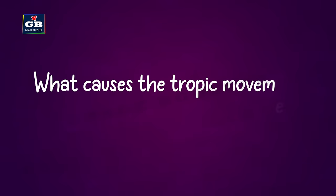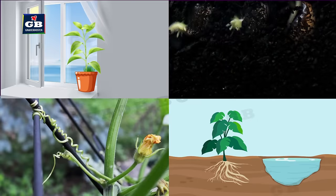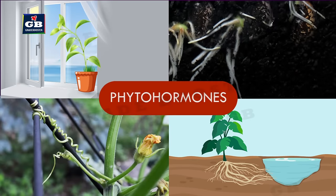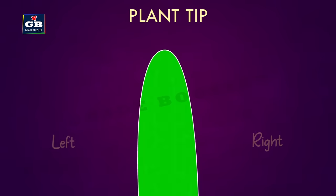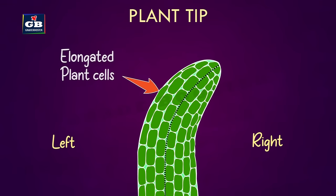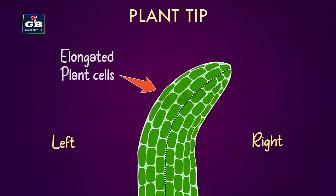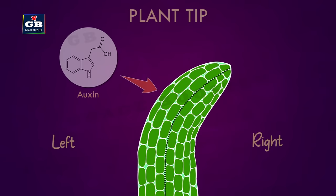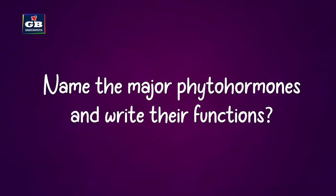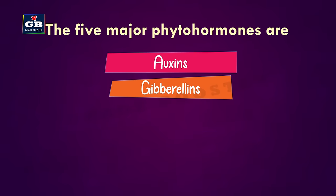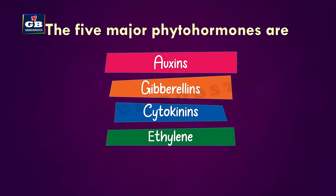Tropic movements in plants are caused by special chemical compounds called phytohormones. For example, if the plant tip has to bend towards the right, the cells in the left side of the tip get elongated, making the plant bend right. The elongation of cells in the left half of the plant tip is caused by a phytohormone called auxin.